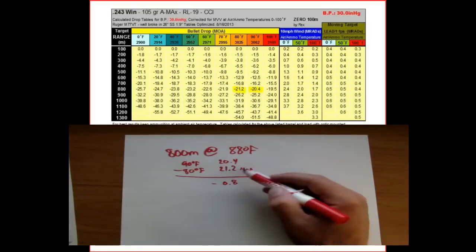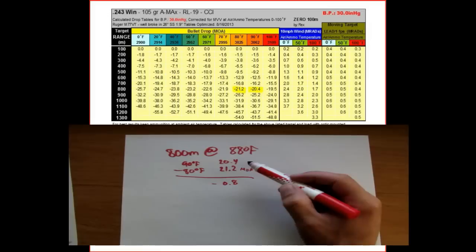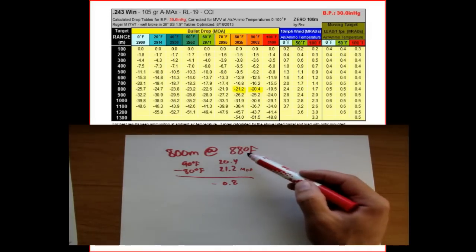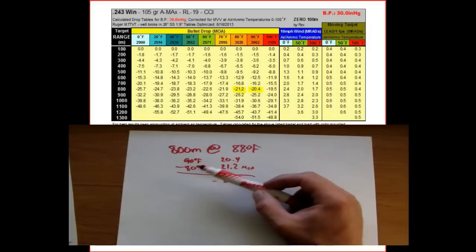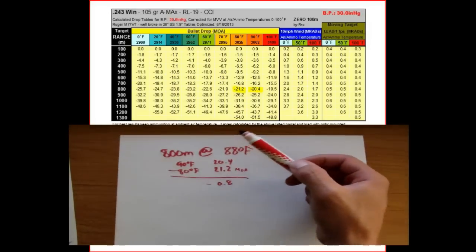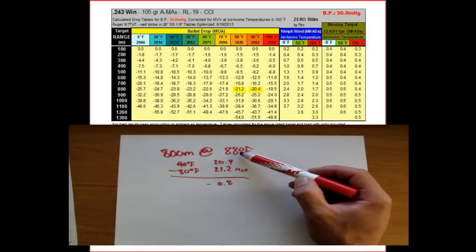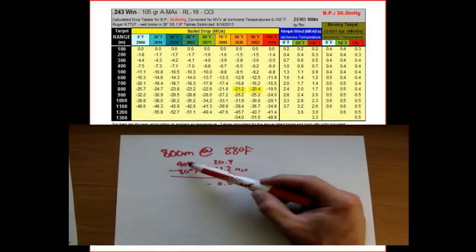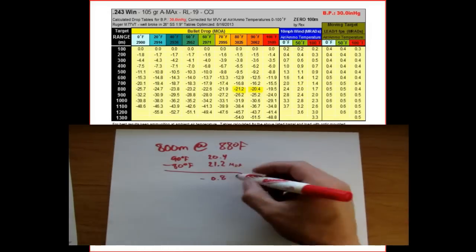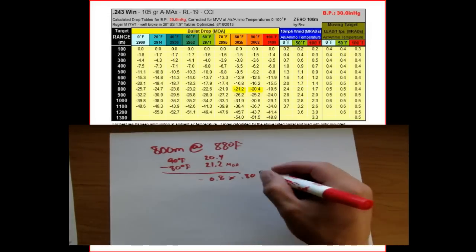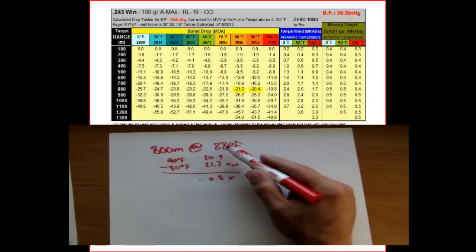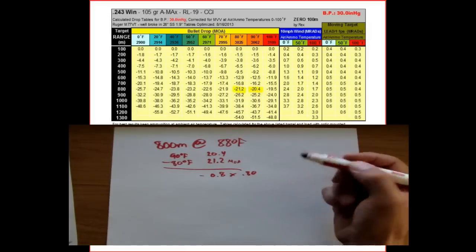Now we take this difference and multiply it by the percentage we are between 80 and 90 degrees. We're trying to figure out 88 degrees, which is 80% of the way from 80 degrees to 90 degrees. So we're going to take the 0.8 difference times 80%, which is 0.80.